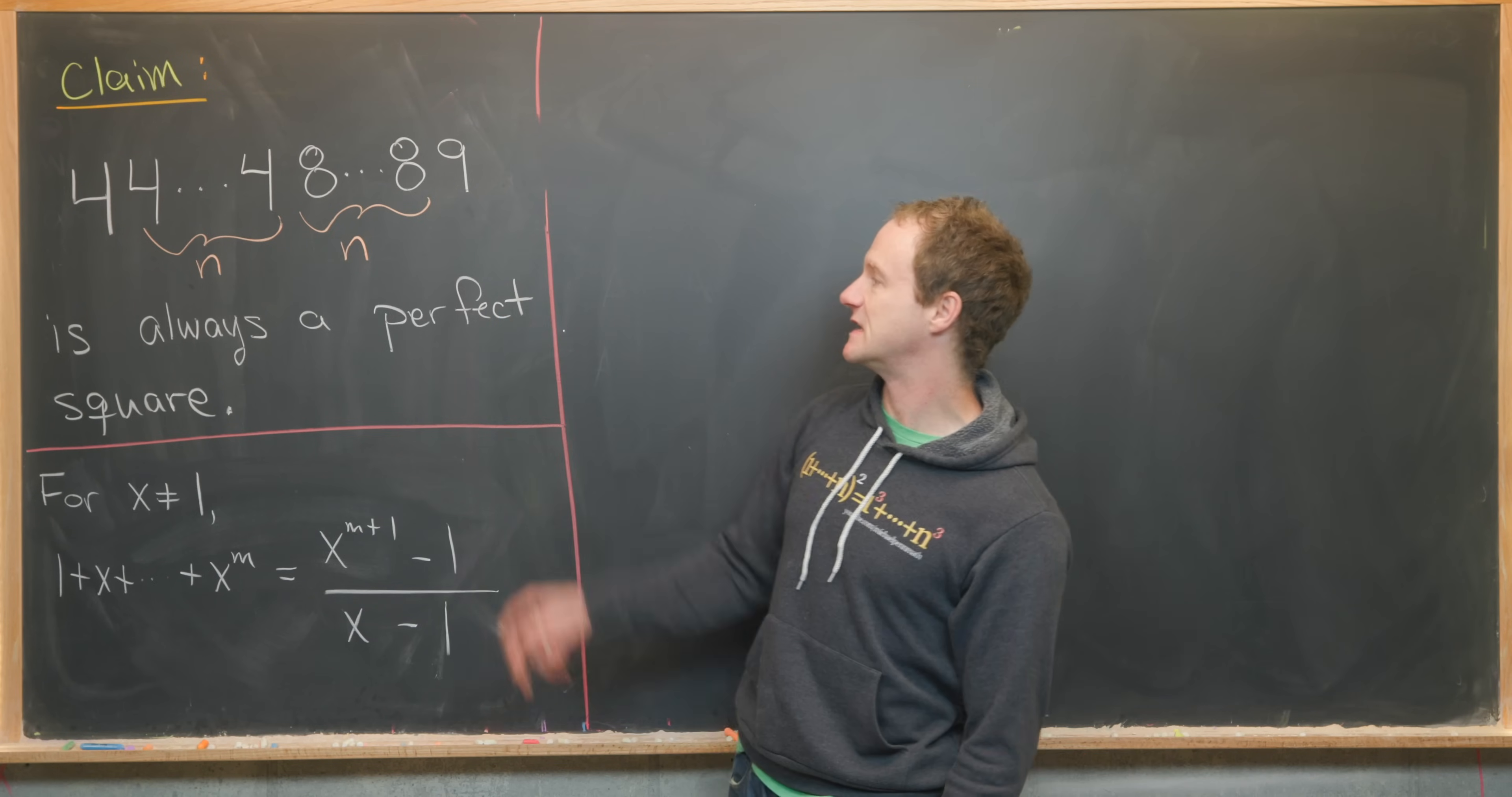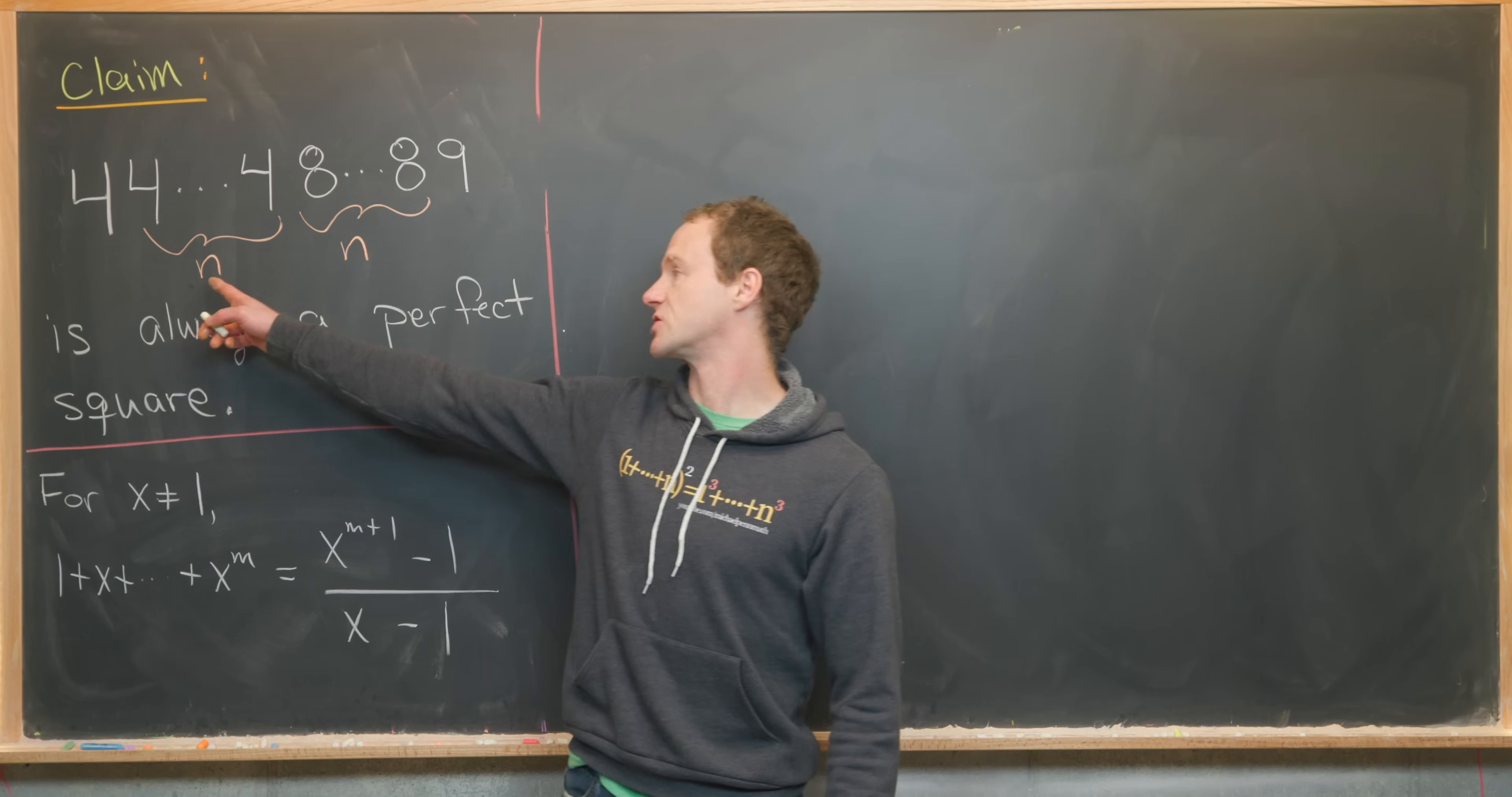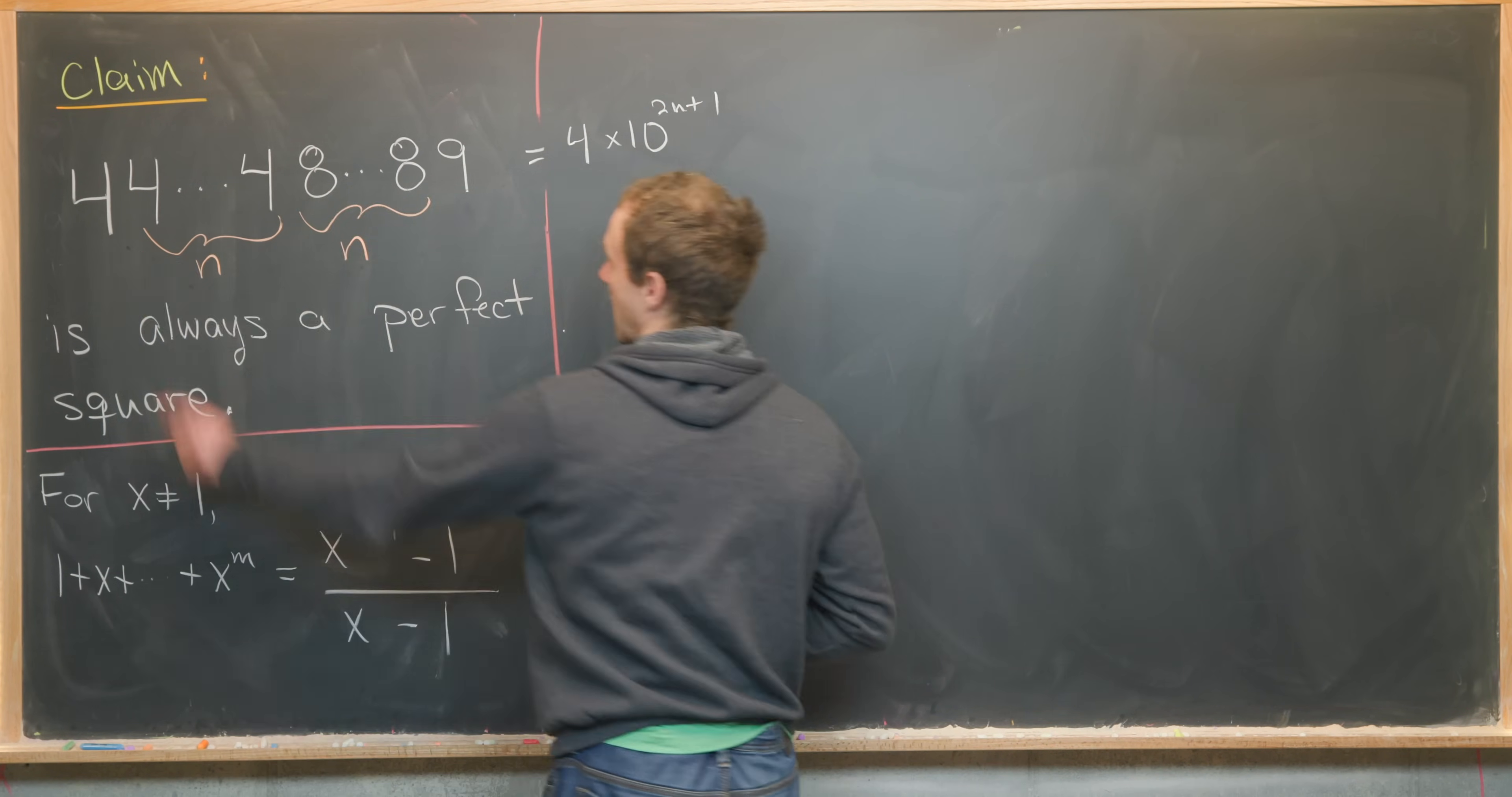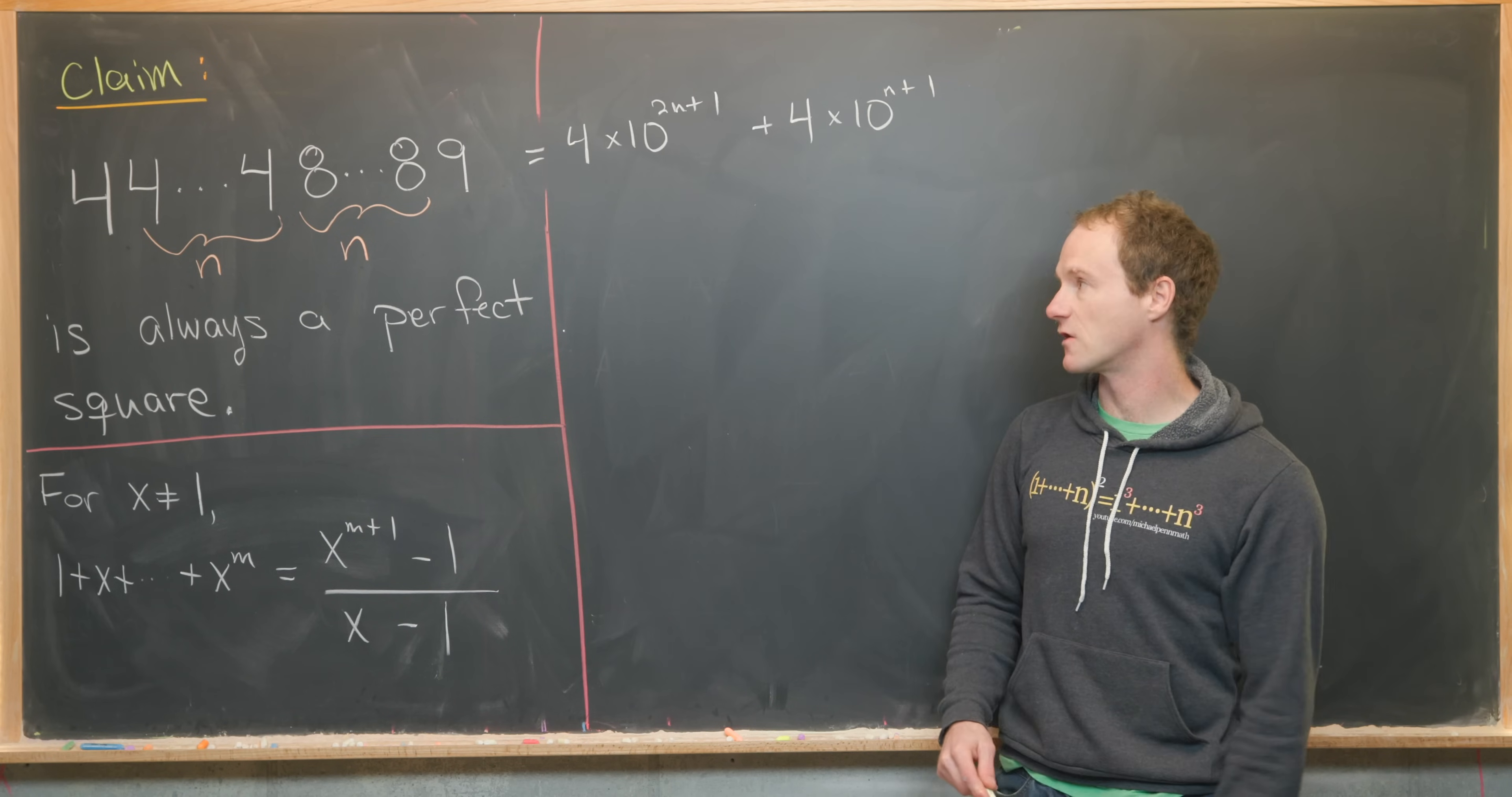So the idea is to write all of these repeated 4s and 8s as geometric series, should say finite geometric series. So notice this top term will be 4 times 10 to the 2n plus 1. That's because there's two n's here. And then this one is attached to 10 to the 0. So that's kind of obvious. So let's see how we can write this. We've got 4 times 10 to the 2n plus 1. That's like the top term. And then we go all the way down to this one right here. But that'll be 4 times 10 to the n plus 1. So let's write that down. So 4 times 10 to the n plus 1.